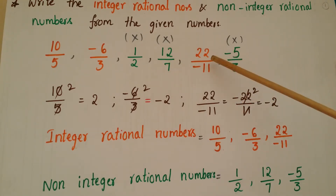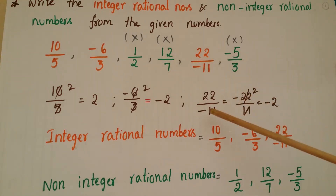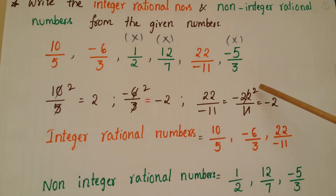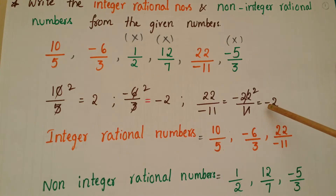If you take the next number 22 by minus 11, converting to standard form gives minus 22 by 11. Since 11 twos are 22, the result is minus 2, which is a negative integer. So this is also an integer rational number.